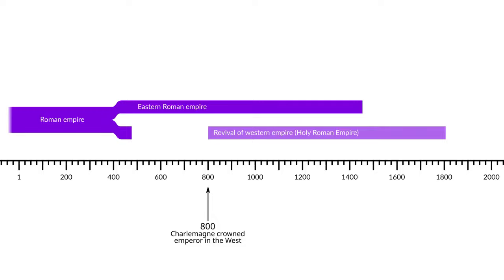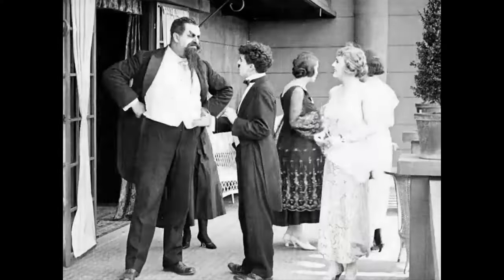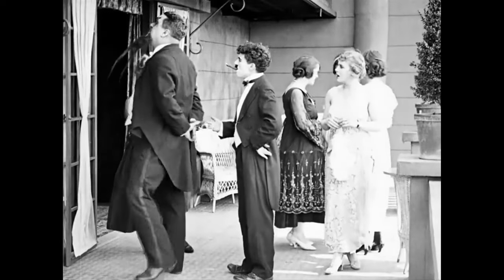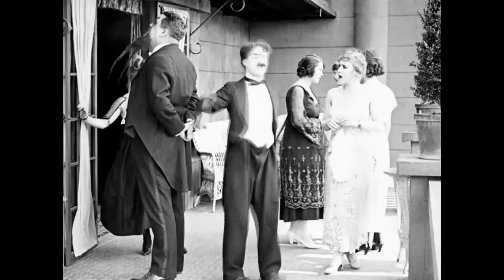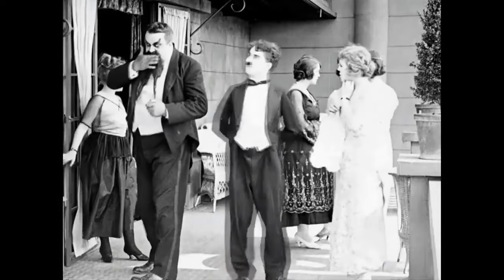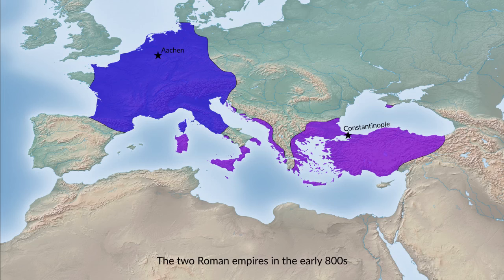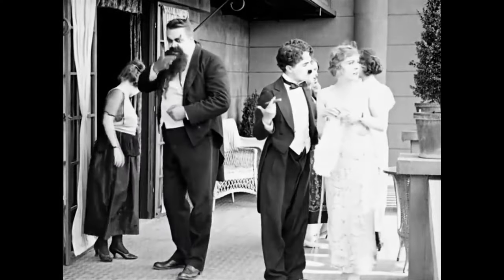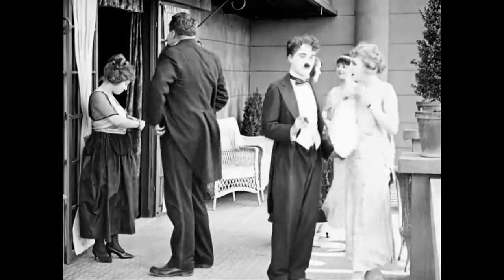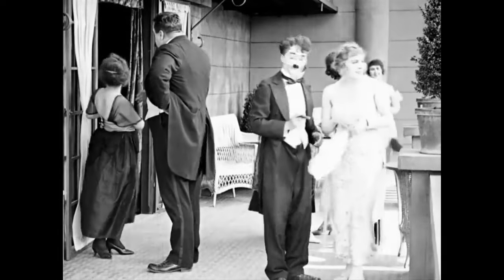The restoration of the Western Empire was kind of annoying to the Romans in Constantinople, because they said: we are the Roman Empire. If a Roman emperor is going to be created in the West, we're going to be the ones to set that up. But also, why would we do that? Because if we're going to retake the West, we'll just rule that as part of the Roman Empire.